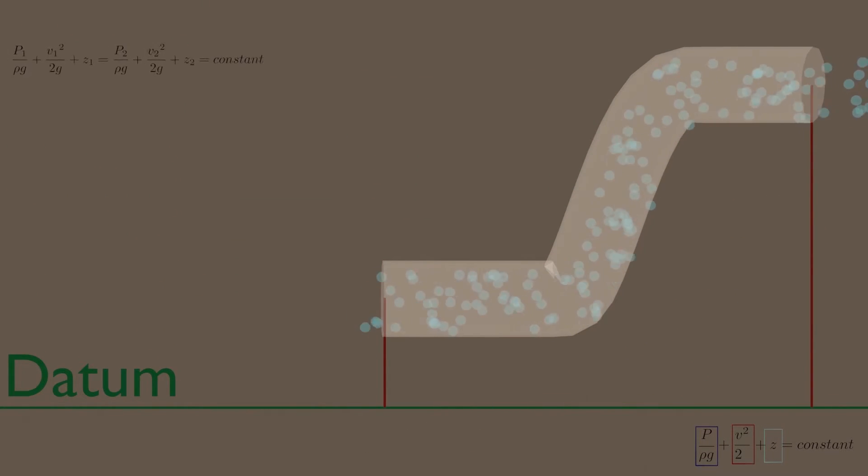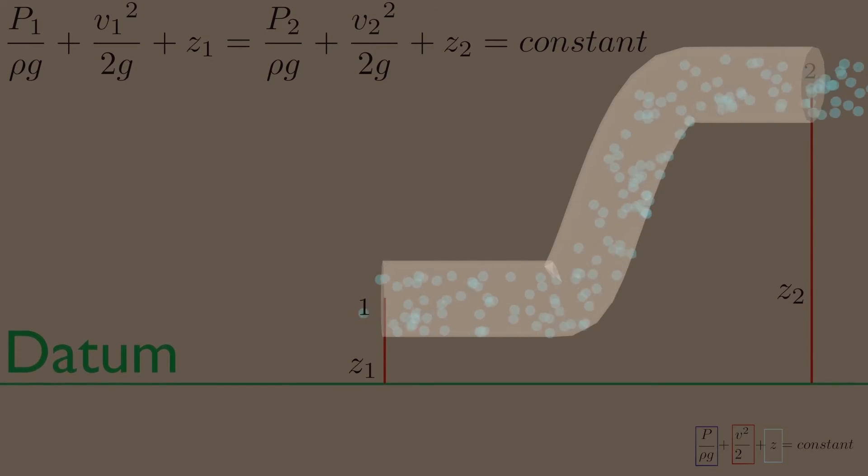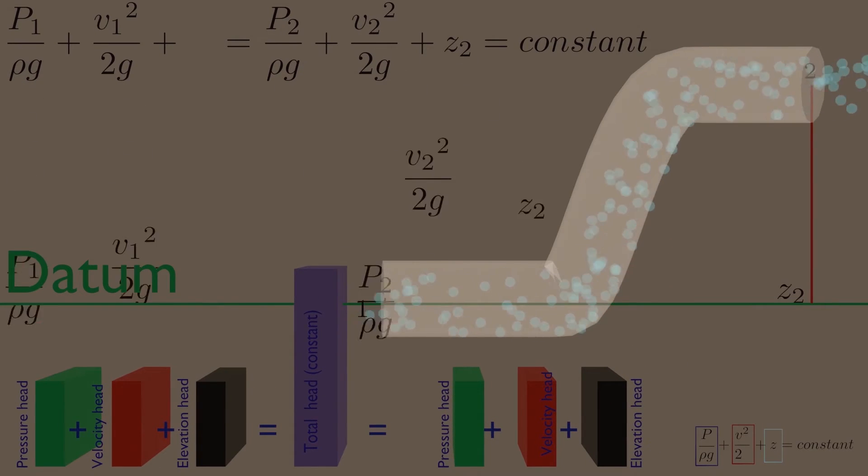Now let us apply Bernoulli's equation in terms of head on two sides of the tube between point 1 and point 2. We choose the datum at point 1, so Z1 is zero.